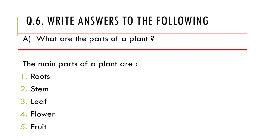Question number 6 — Write answers to the following. First question is: what are the parts of a plant? You have to write all parts of the plants that you can see every day. The main parts of a plant are: first, roots; second, stem; third, leaf; fourth, flower; and fifth, fruit. You can write this answer in point-wise format.